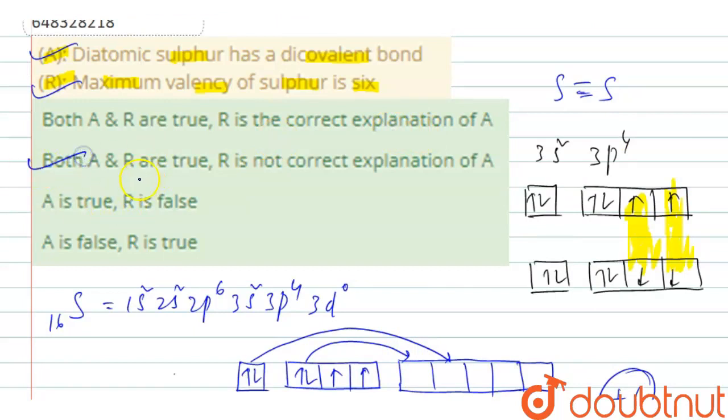Therefore, both assertion and reason are true, but reason R is not correct explanation of A. Option 2 is the correct option. Thank you.